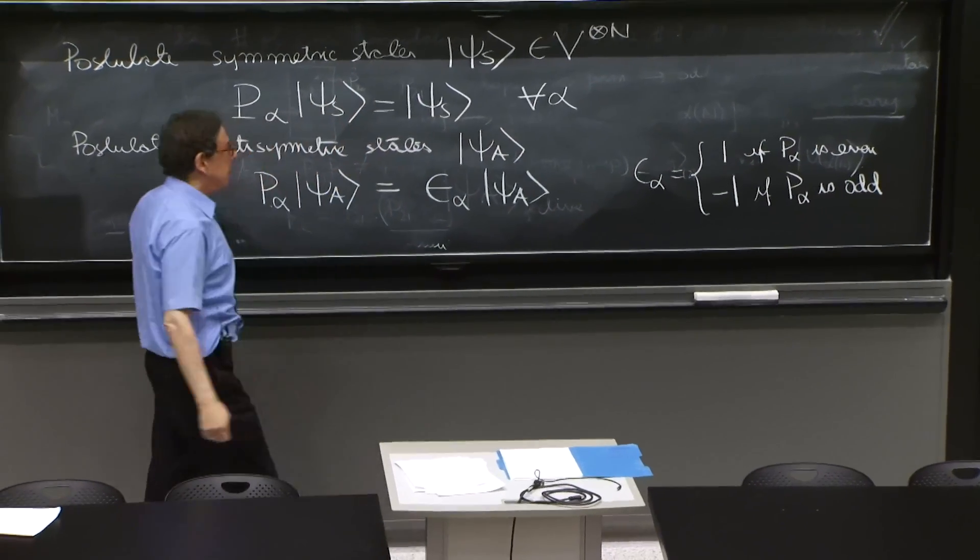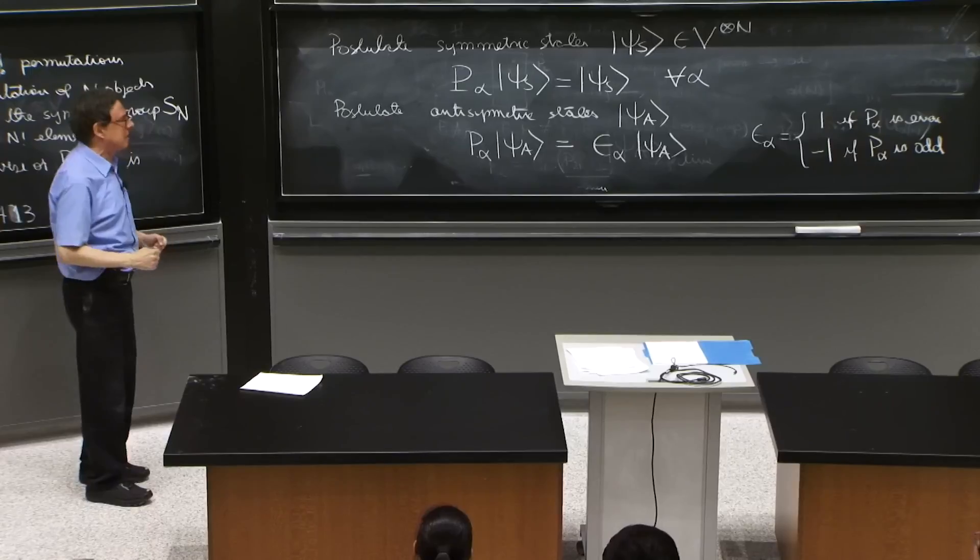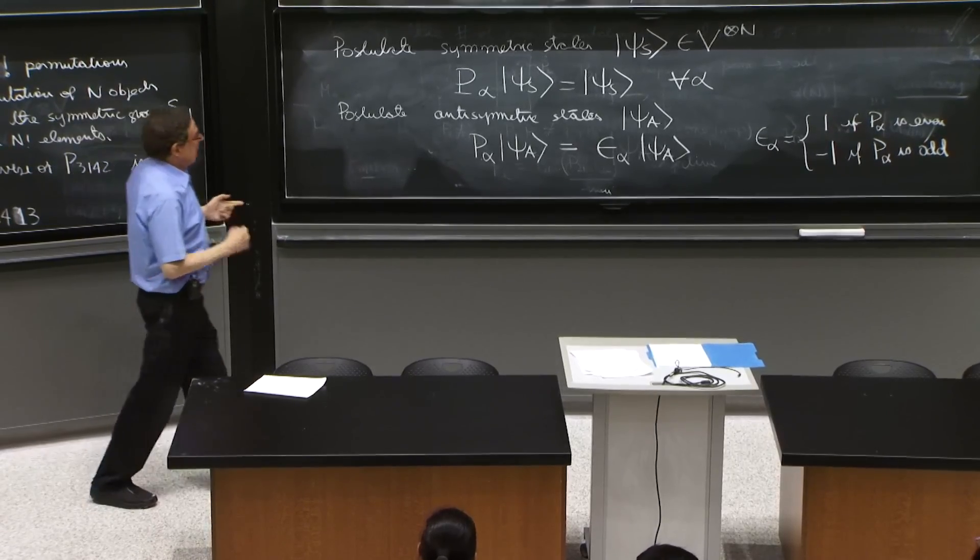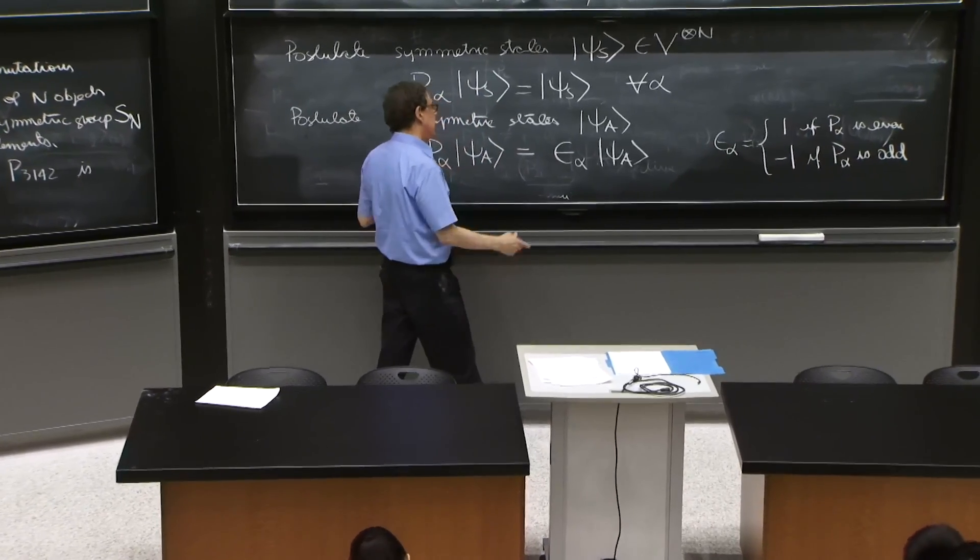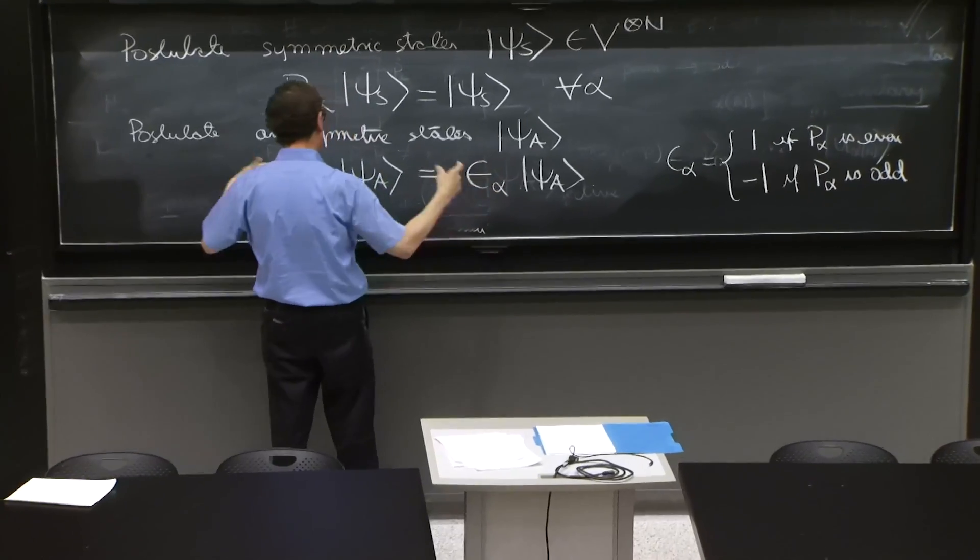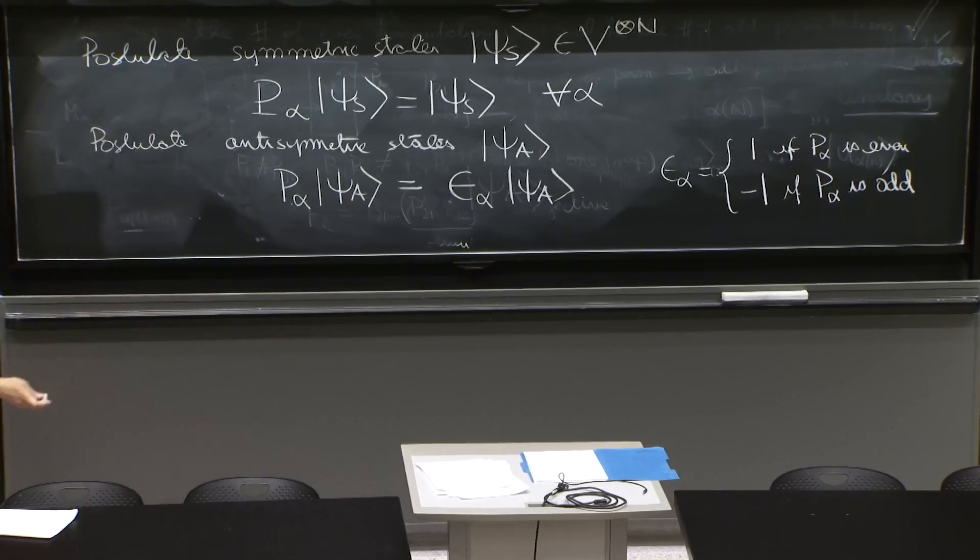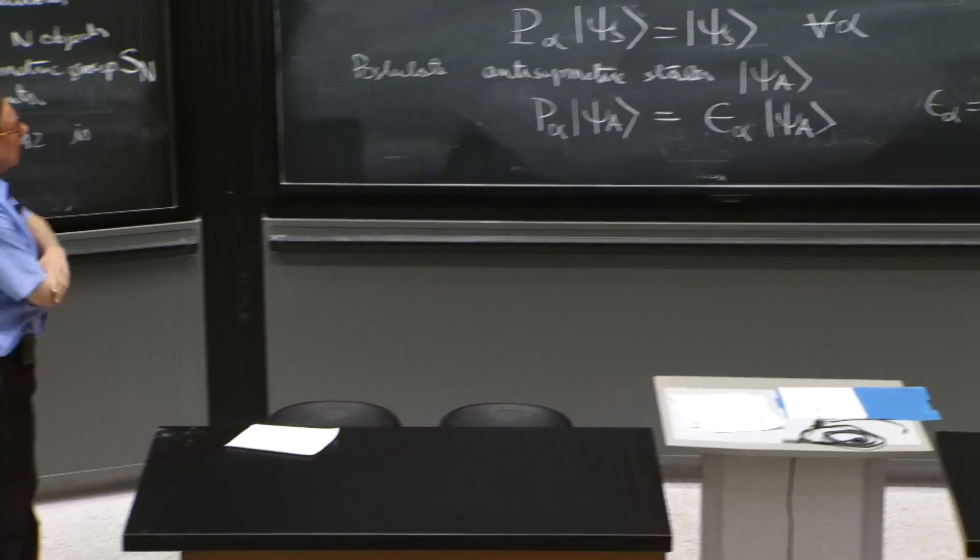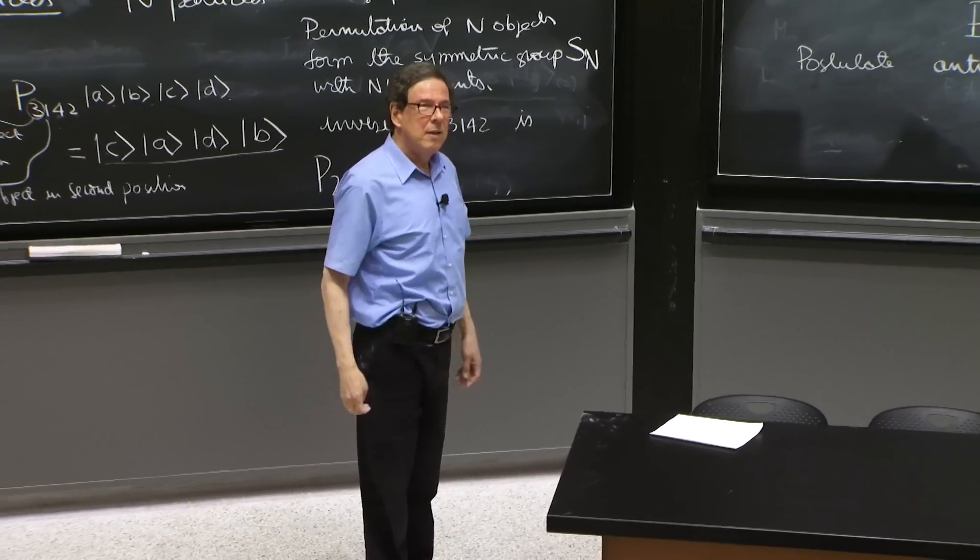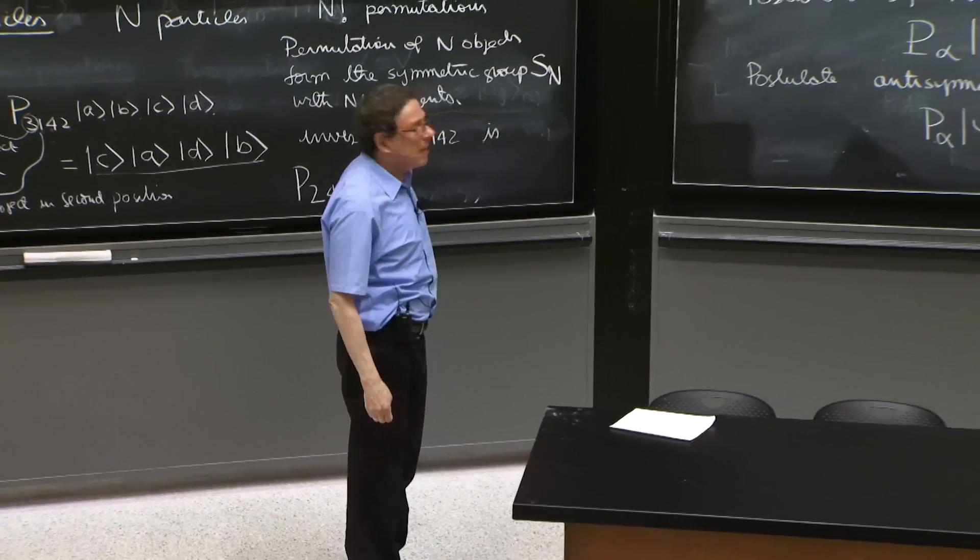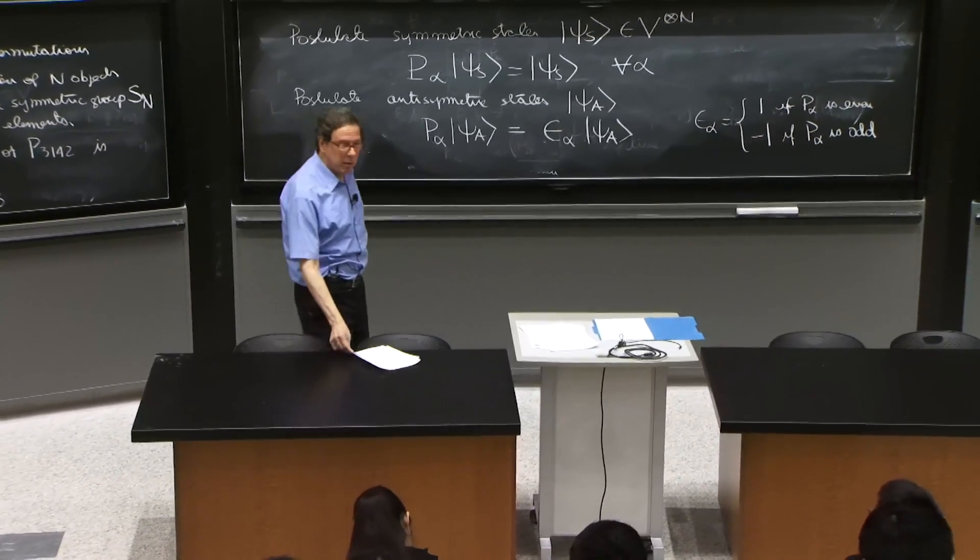So an odd permutation is one that has an odd number of transpositions. And that makes sense. So this is a way to do this consistently. If you have a single transposition, it will put a minus. But if you have two transpositions, it will put a plus, as it should. And the identity element is an even permutation. Therefore, it works as well. So this is a nice thing. This is the only way you can define these anti-symmetric states, even before we construct them.